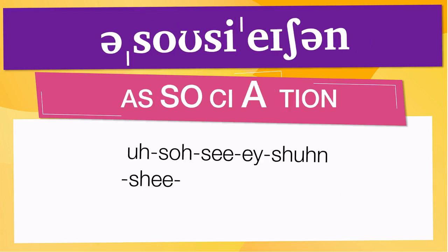Pay attention to the pronunciation. The first one is the word represented using the international phonetic alphabet. To pronounce association, have in mind that the size of the syllable indicates where the accent or stress is. In this case, the accent is in the fourth syllable, corresponding to A. Below are other ways to pronounce it.